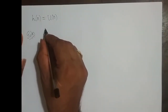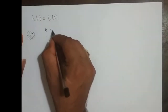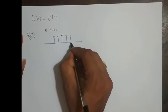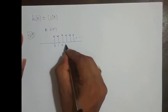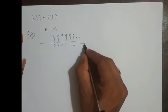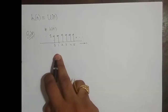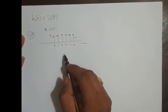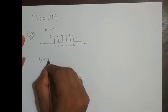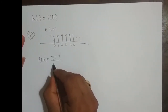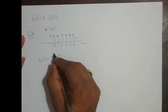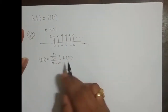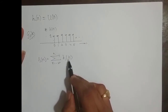First we shall sketch the signal. h is a unit step function. The unit step function starts from 0 and goes till infinity, its amplitude is 1. Now I have to write it in terms of k — the independent variable has to be written in terms of k. So what is the formula for step response? S of n is equal to summation k varying from minus infinity to n, h of k.